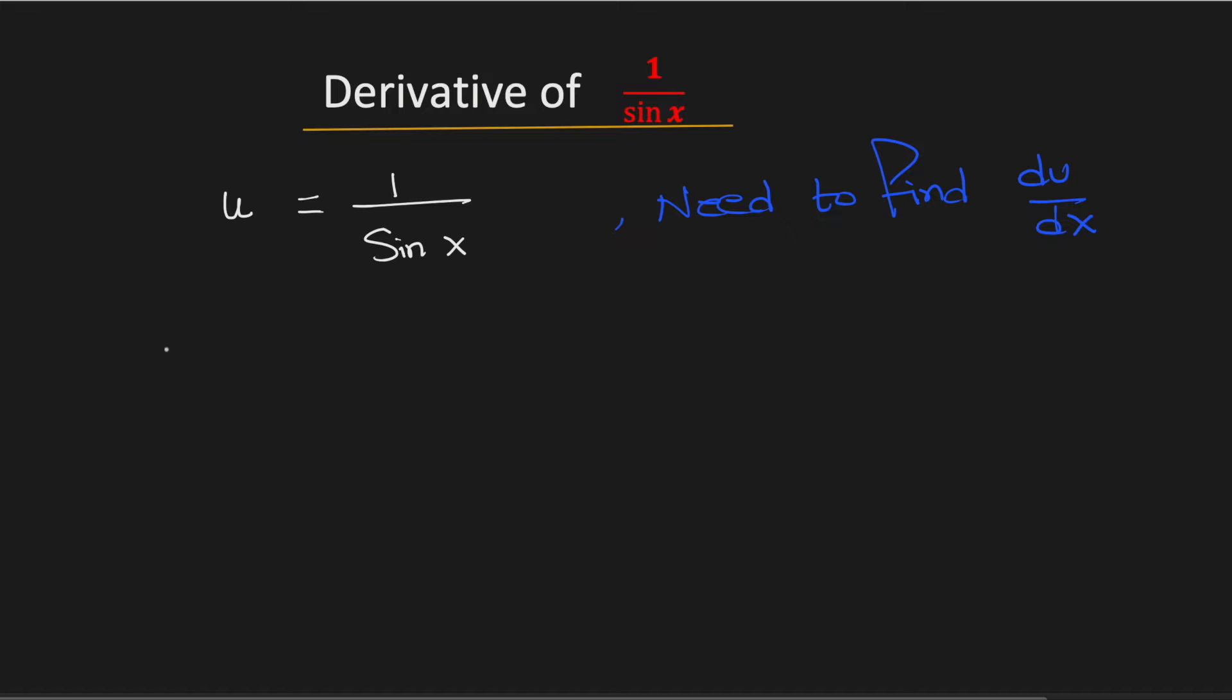Now cross multiplying we will get u times sin x is equal to 1. Now we will differentiate both sides with respect to x.